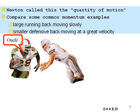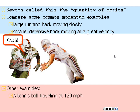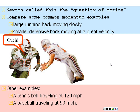A tennis ball traveling at 120 miles per hour has a certain amount of momentum — small mass but great speed, hard to stop. A baseball at 90 miles per hour has a little more momentum because of its greater mass. A golf ball hit off the tee: the swing has angular momentum that gets transferred into the small golf ball, giving it great velocity, and the angular momentum gets transferred into the linear momentum of the golf ball.